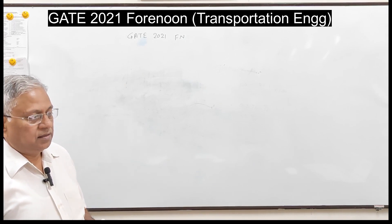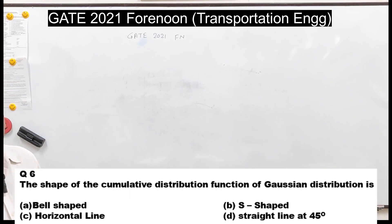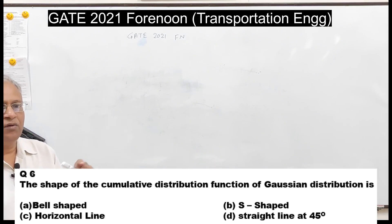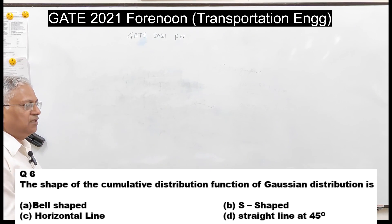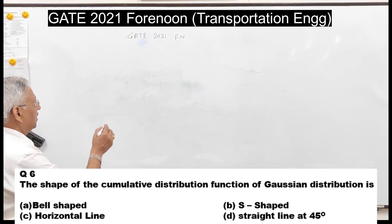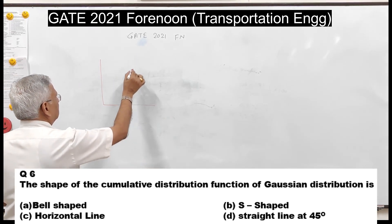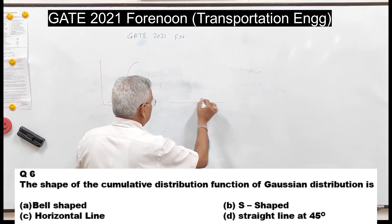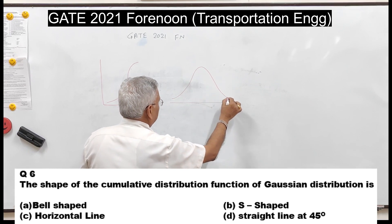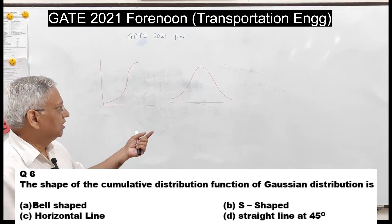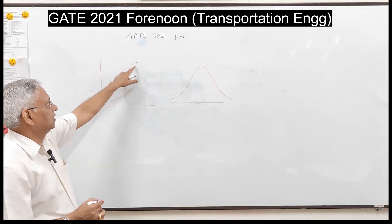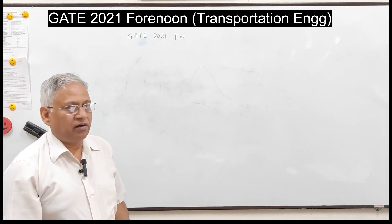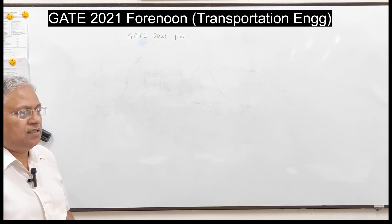Question six: the shape of the cumulative distribution function of the Gaussian distribution. The Gaussian distribution is also called the normal distribution. Its CDF is S-shaped, so the answer is B. Note: the bell shape refers to the probability distribution function (PDF), not the CDF — the CDF is always S-shaped.